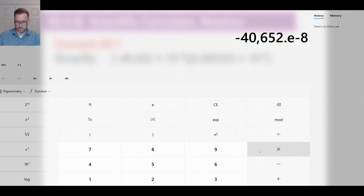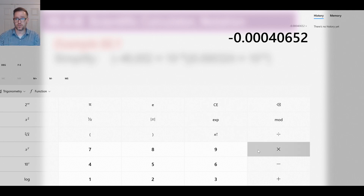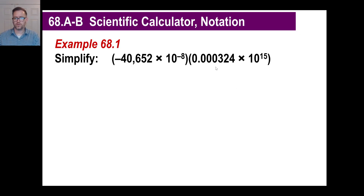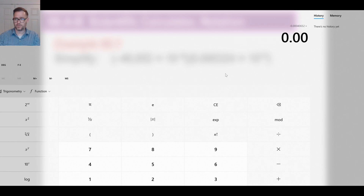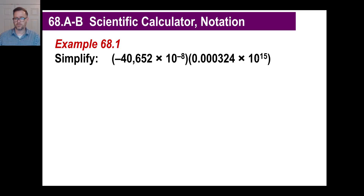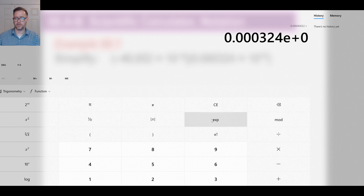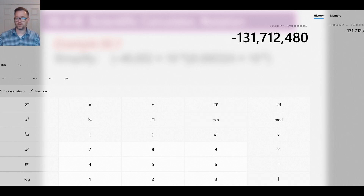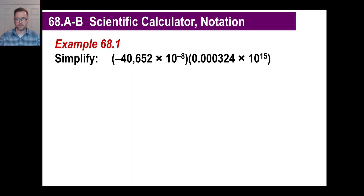Go ahead and hit multiply — on a keyboard you can hit Shift+8 for the asterisk, which is the same thing as multiplying. Now we're going to multiply by 0.000324, so enter 0.000324. The exponent is 10 to the 15th, so hit exponent then 15. Hit equals and there it is.